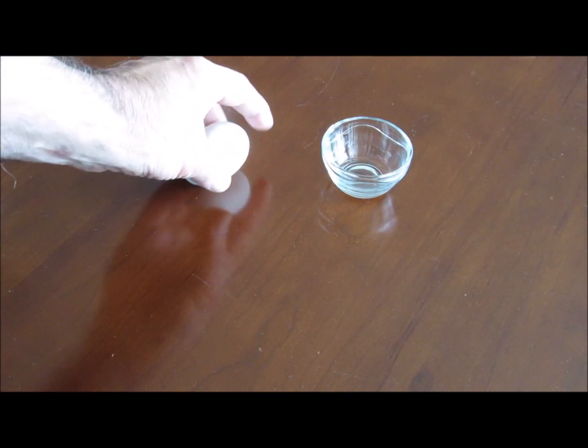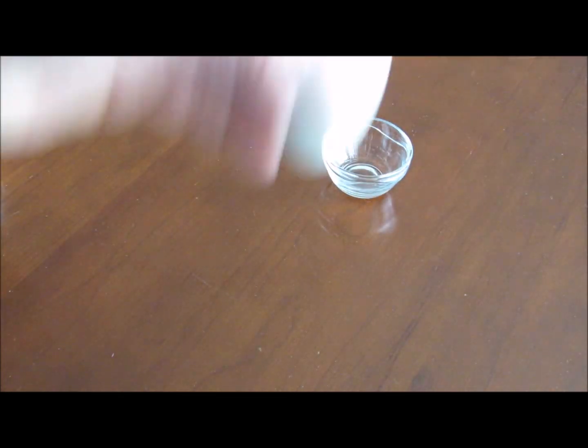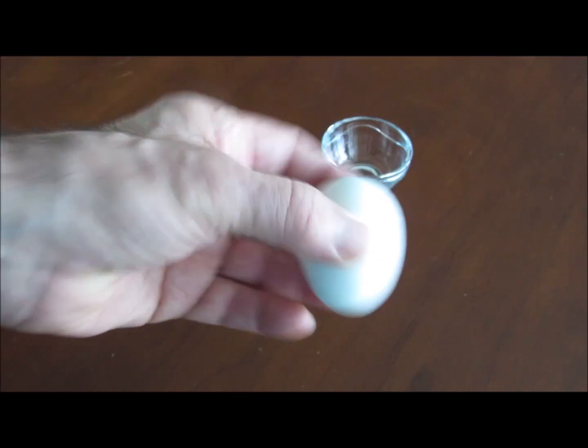When we shake the third egg, it makes a rattling sound. This egg has dried up and the yolk is loose inside.